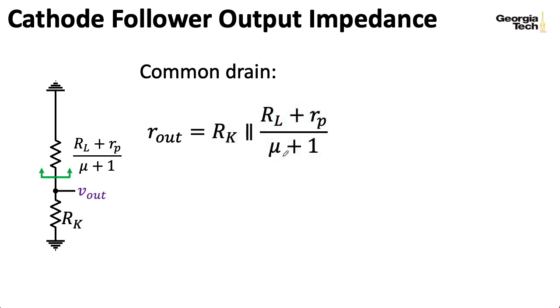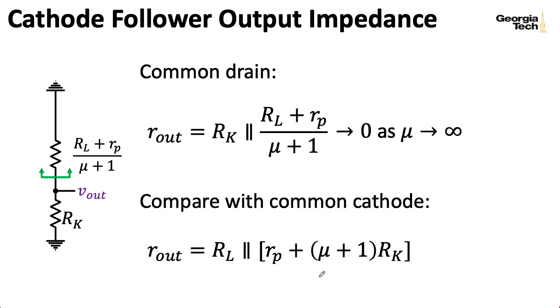Notice that if you increase mu, you wind up decreasing this resistance. So that starts to dominate the parallel combination. It doesn't really matter what RK is. So as you improve mu, you improve your output impedance. And it's this very low output impedance that makes this such a good voltage buffer. It's instructive to compare this with the output impedance of the common cathode amplifier, where you multiply by mu plus one instead of dividing by mu plus one. So for the common cathode, the limiting factor as mu increases is this load resistance RL. And notice as mu increases for your common cathode stage, the output impedance actually gets worse.